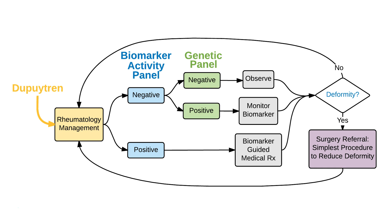And if the person has a deformity, then they're referred to the surgeon to have the lowest-risk, simplest procedure to reduce the deformity. And then they're referred back to the rheumatologist. This is a standard model for chronic rheumatologic diseases.